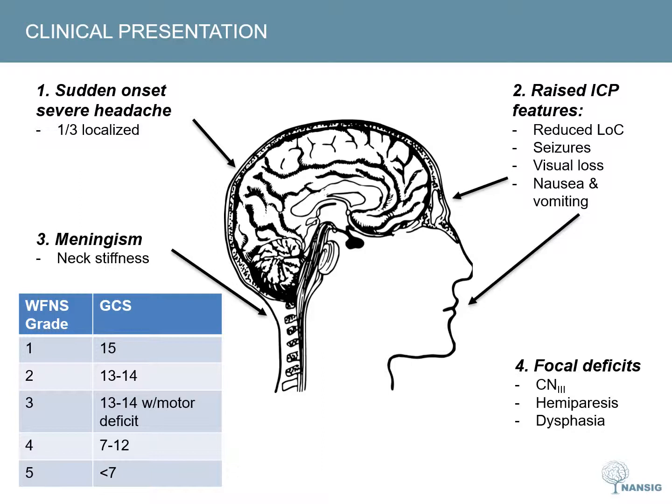The WFNS — World Federation of Neurological Surgeons — grading system is based on the Glasgow Coma Score and the presence or absence of focal neurological deficit. The increase in grade correlates with a worsening prognosis.